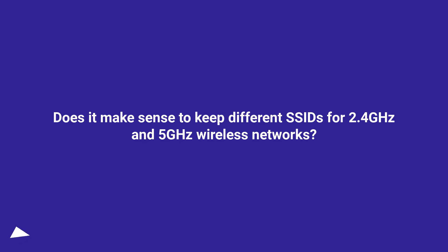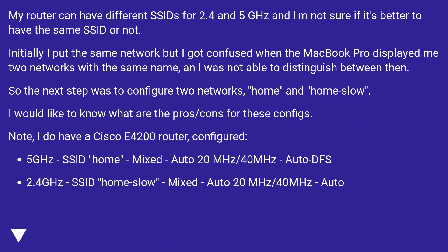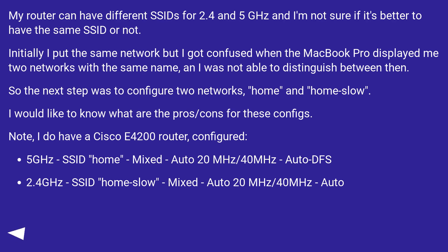Does it make sense to keep different SSIDs for 2.4GHz and 5GHz wireless networks? My router can have different SSIDs for 2.4 and 5GHz and I'm not sure if it's better to have the same SSID or not. Initially I put the same network but got confused when the MacBook Pro displayed two networks with the same name, and I was not able to distinguish between them. So the next step was to configure two networks: home and home slow. I'd like to know what are the pros and cons for these configs.